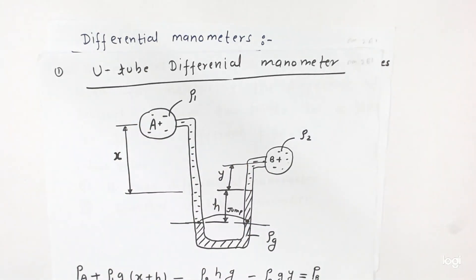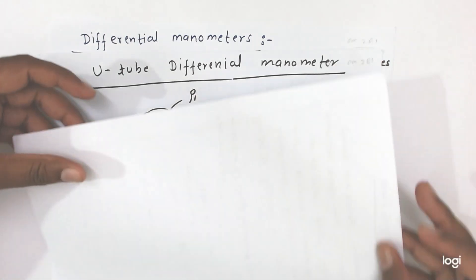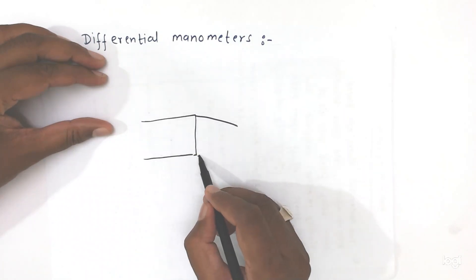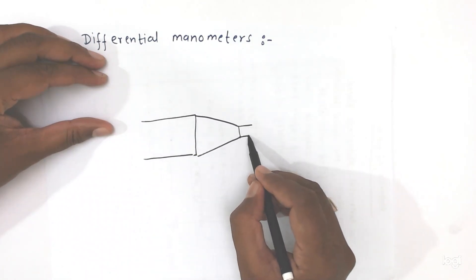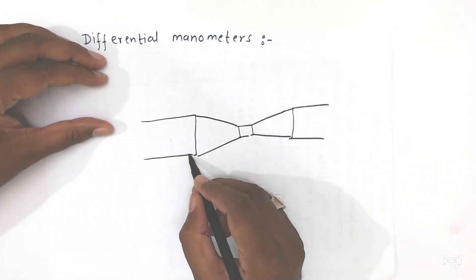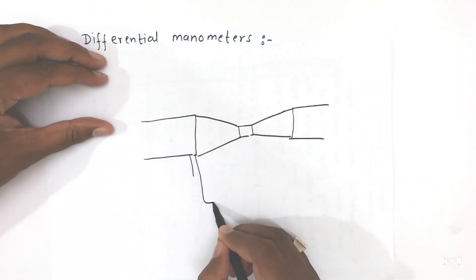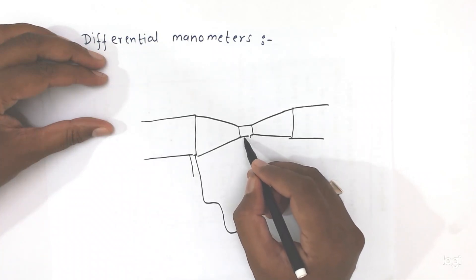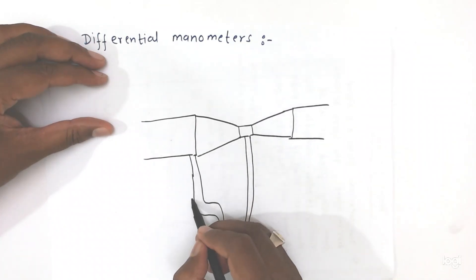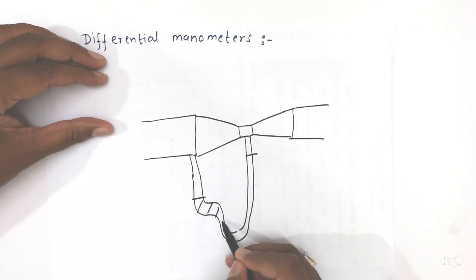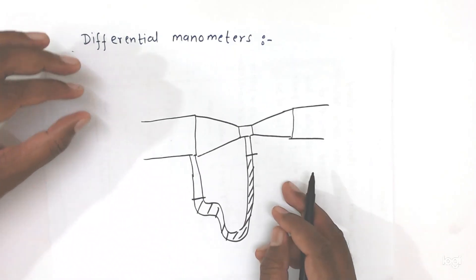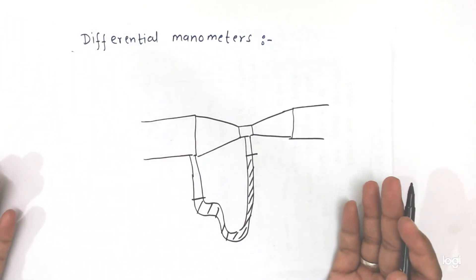Or we can say, if we take a single pipe like this, one end is connected here and the other end is connected here. Because of this, we can measure the difference in pressure here also. So it can measure the pressure difference in a single pipe or in two different pipes.